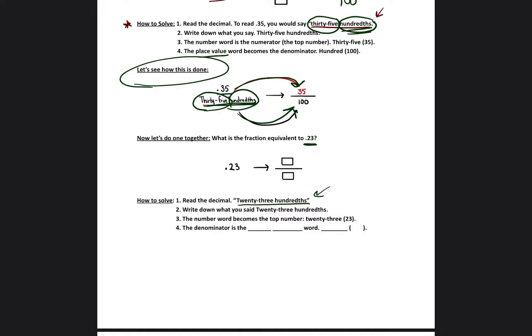And now we're going to use the number word as the numerator. So the number word is whatever number that you said. So 23. So the top of the fraction is going to be 23. And the denominator is going to be the place value word. And that place value word that we read was hundredths. So 100 is going to be the denominator. So 23 hundredths is 23 over 100 written as a fraction.